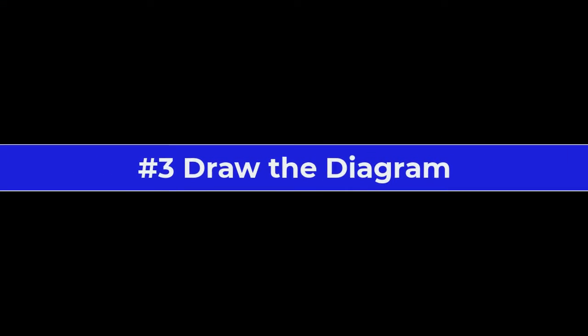Step three: draw the diagram. Some people jump straight in and start drawing without planning the use cases and actors in the way we've just done. This causes issues because they'll end up not having enough space on their diagram, or they put the use case bubbles in odd places, which means they end up redoing the entire diagram anyway. So it's a real time-waster instead of a time-saver.